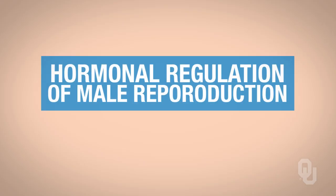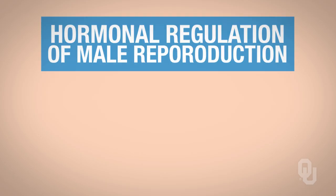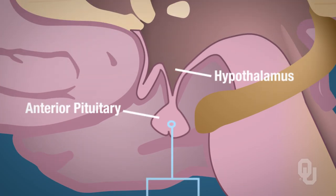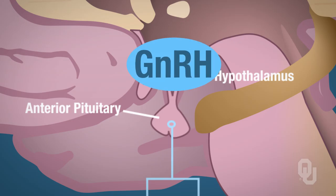This video will discuss the hormonal regulation of male reproduction. Let's start with what you are already familiar with: the hypothalamus and the synthesis and secretion of gonadotropin-releasing hormone, GnRH.